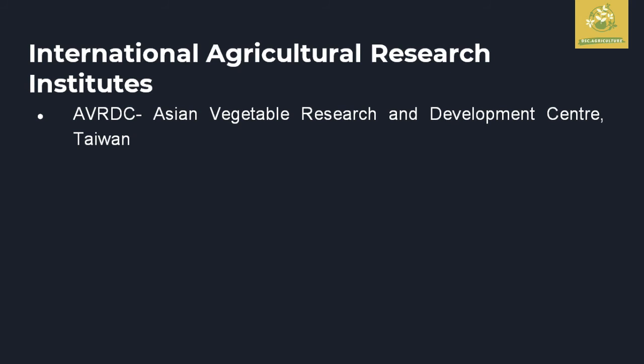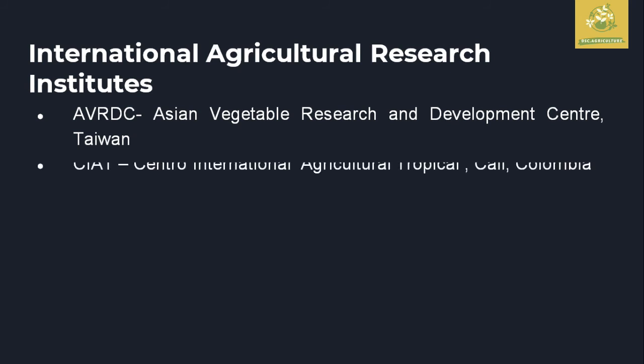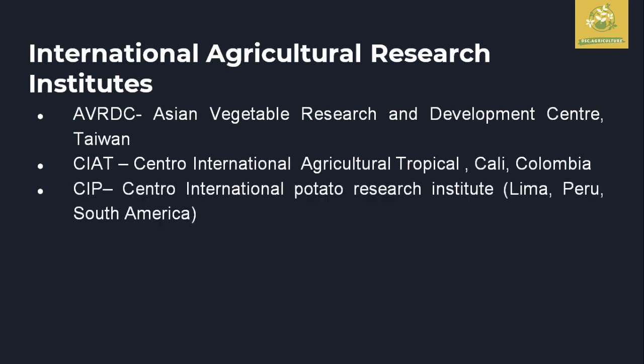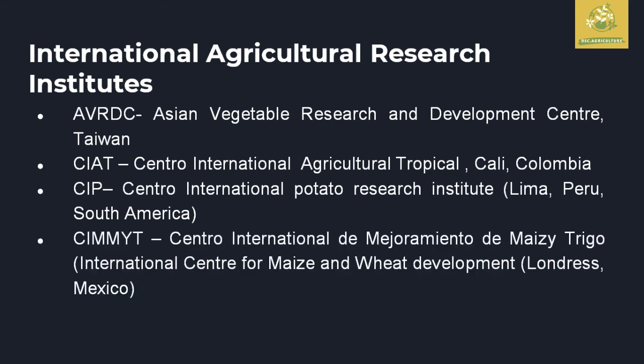For international agriculture research institutes: AVRDC (Asian Vegetable Research and Development Center) is situated in Taiwan. CIAT (Centro Internacional de Agricultura Tropical) is situated at Cali, Colombia. CIP (Centro Internacional de la Papa — International Potato Research Institute) is situated at Lima, Peru, South America. CIMMYT (International Center for Maize and Wheat Improvement) is situated at Londres, Mexico.